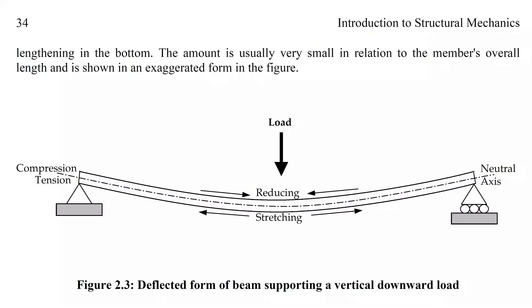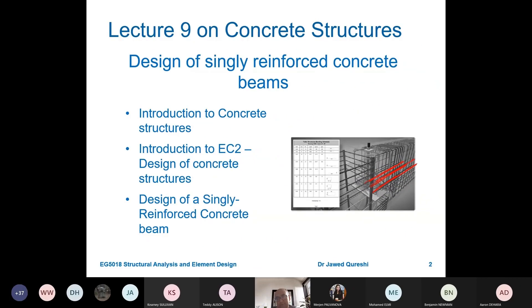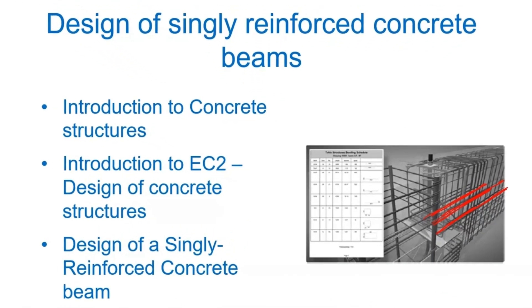That deflection leads to tension at the bottom and compression at the top. Concrete as a material is very weak in tension and very strong in compression. The beam we are discussing has tensile bars at the bottom. At the top you can see compression bars, sometimes termed hanger bars, and then you have rings called stirrups or shear reinforcements — this is how reinforcement is provided inside a concrete beam.